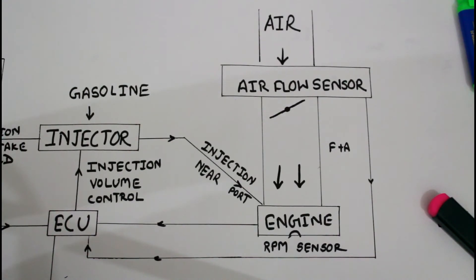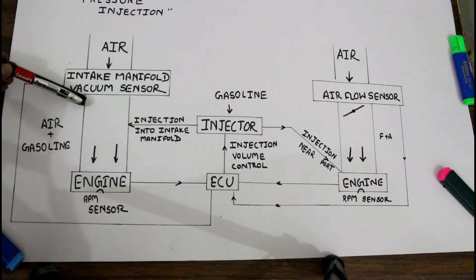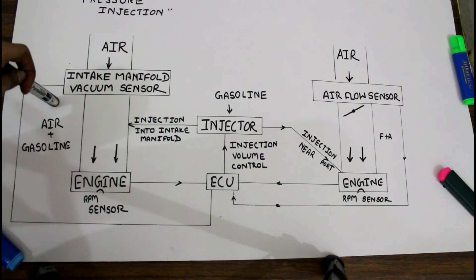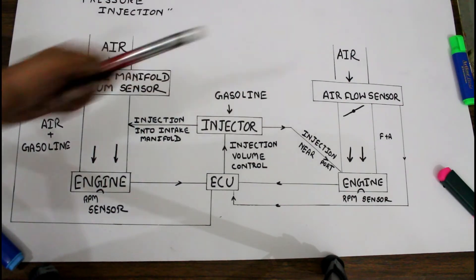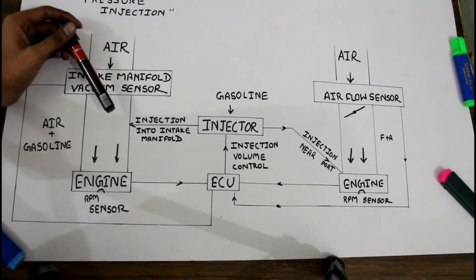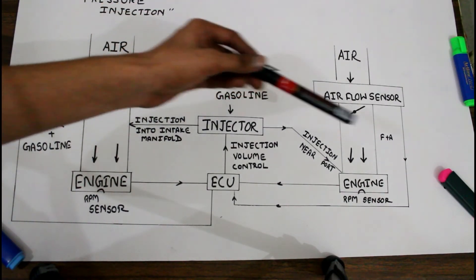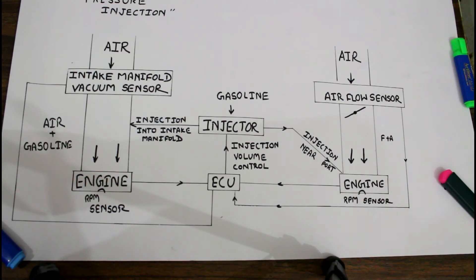When injection takes place, the gasoline mixes with the air and the mixture enters the cylinder. Both DMPFI and LMPFI are almost similar, but with some basic differences: DMPFI has a manifold fuel injection system whereas LMPFI has a port fuel injection system. In DMPFI, injection depends upon vacuum generated in the intake manifold; in LMPFI, injection depends upon air flow metering. Also, in DMPFI injection takes place into the intake manifold, while in LMPFI injection goes directly into the engine, making it a direct fuel injection system.